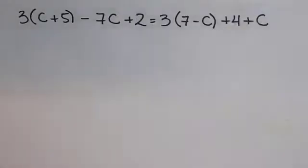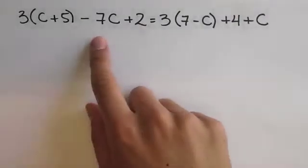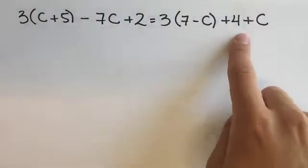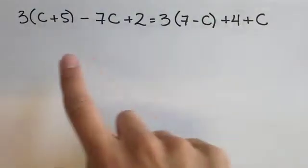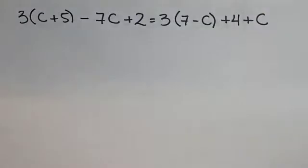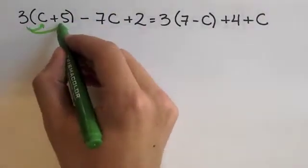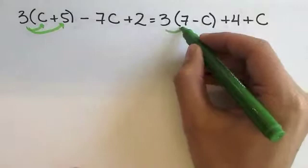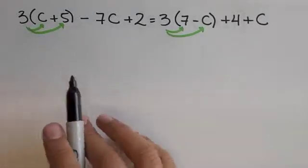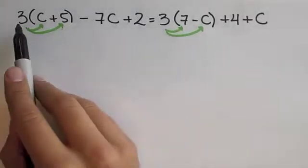Let's check out our first example. 3 times (c + 5) minus 7c plus 2 is equal to 3 times (7 - c) plus 4 plus c. Here you see that the parentheses can be repeated in several moments of the equation. We want to begin performing the distributive property as we have two parentheses. This application of the distributive property in both situations can happen at the same time.